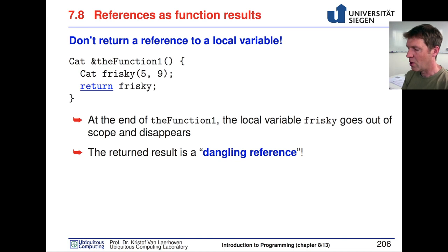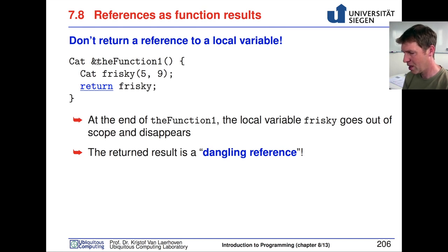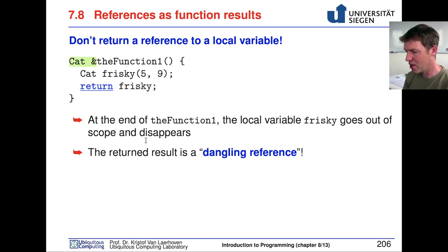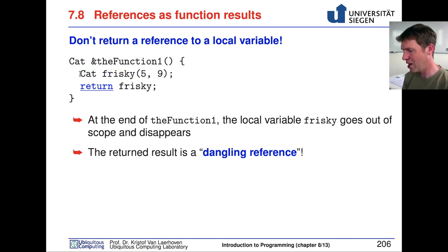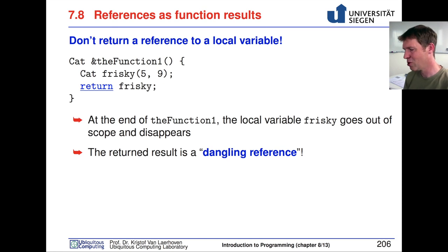An important warning: you should never return a reference to a local variable. If a function creates a Cat instance called frisky internally and returns a reference to it, this is very dangerous. As soon as the function returns, whatever was created inside goes out of scope and is completely lost. Whatever is being returned is called a dangling reference — similar to a dangling pointer that points to memory you didn't intend to point to.